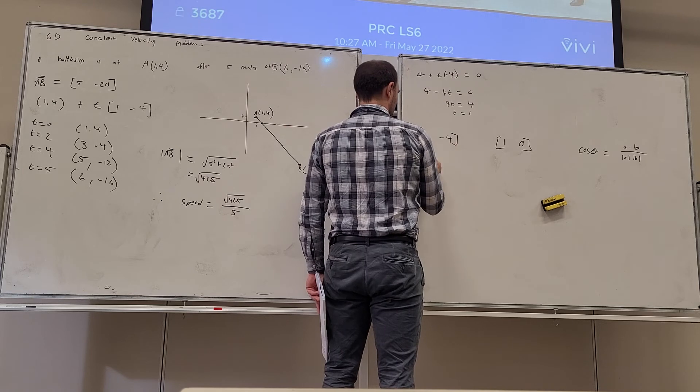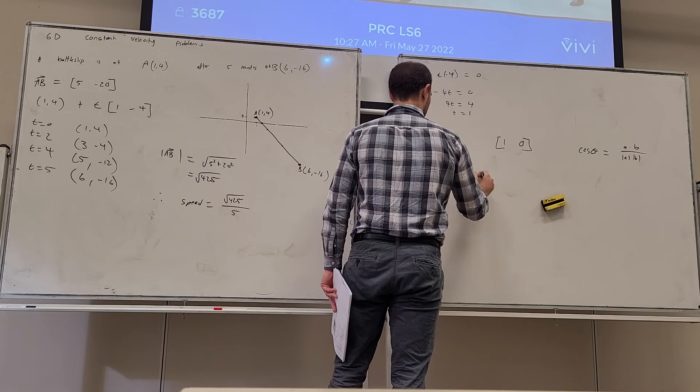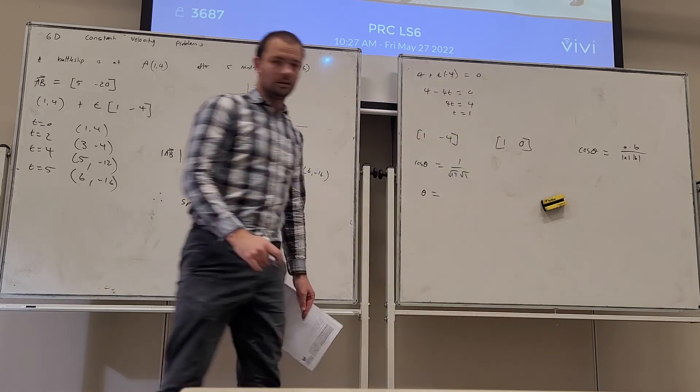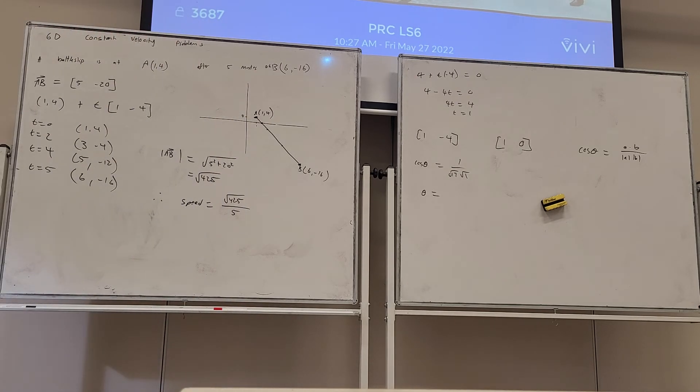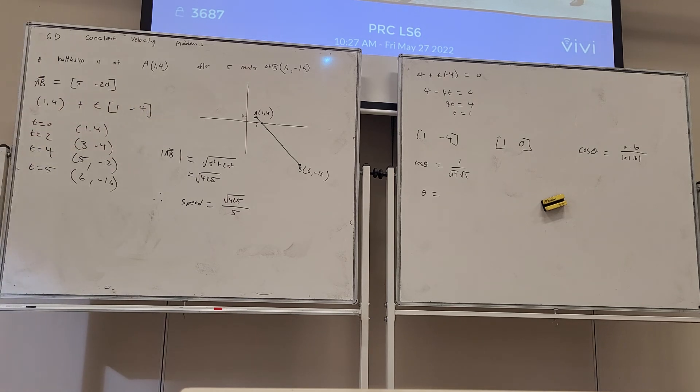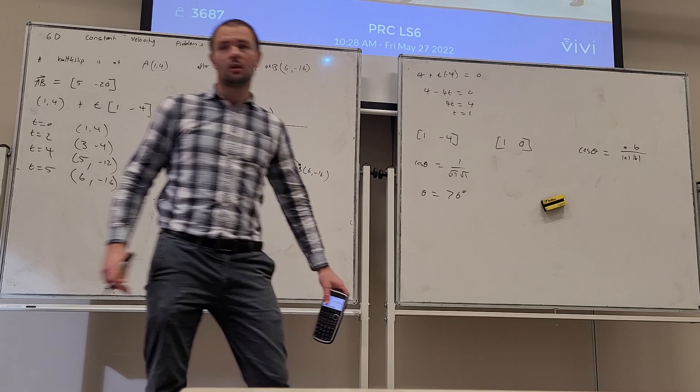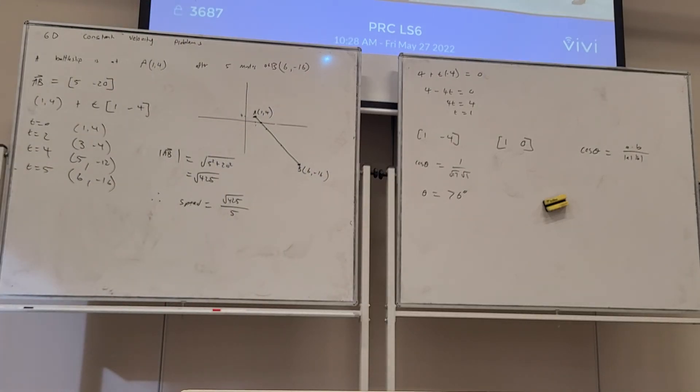The x-axis is a dot b over modulus a times modulus b. So the dot product of these two is going to be 1 on top of the square root of 1 and 16, which is 17. So theta equals cosine inverse of 1 on root 17, which is 76.3 degrees. Alright, any questions? Alright, so they will start off a bit easier than this one, but they do get harder. Let's see how we go.